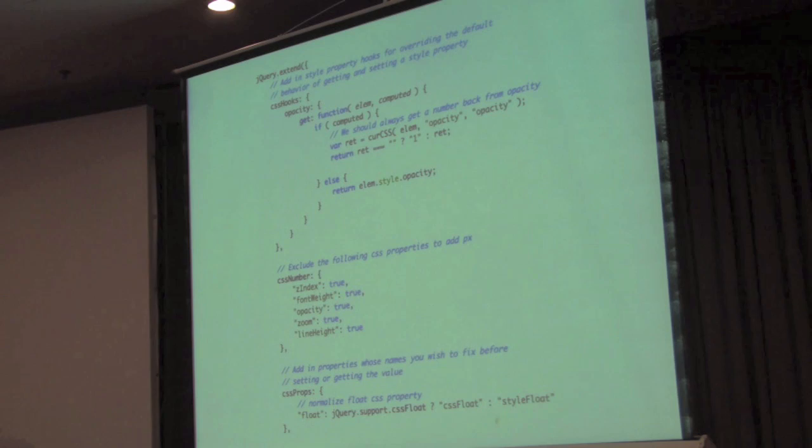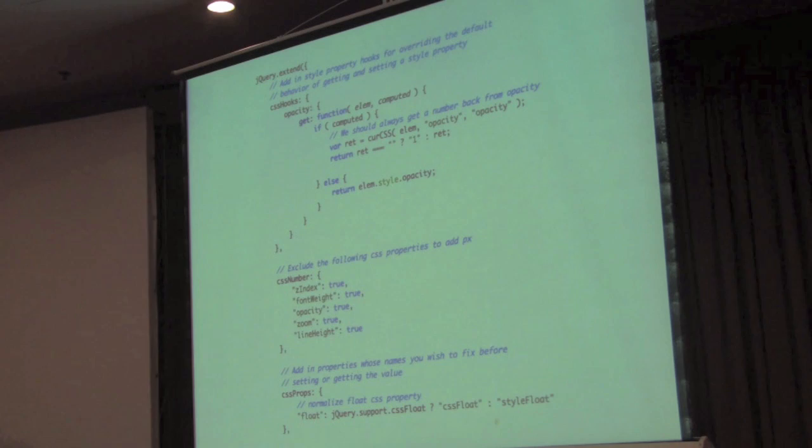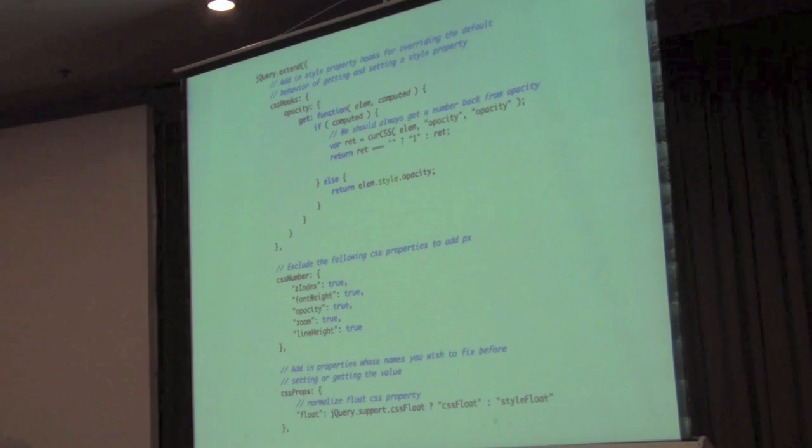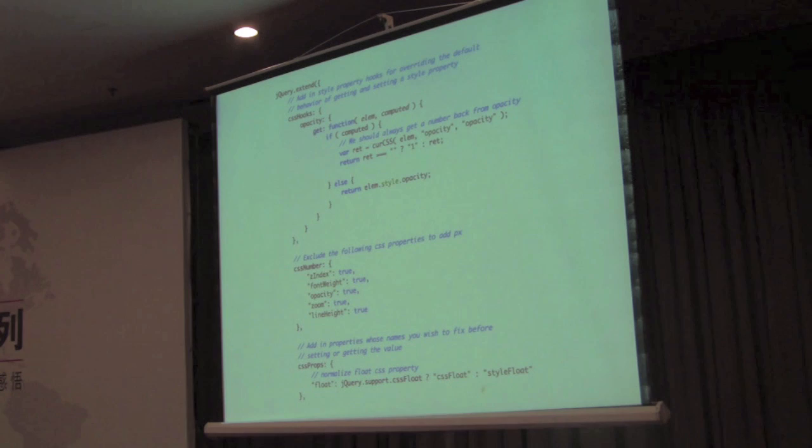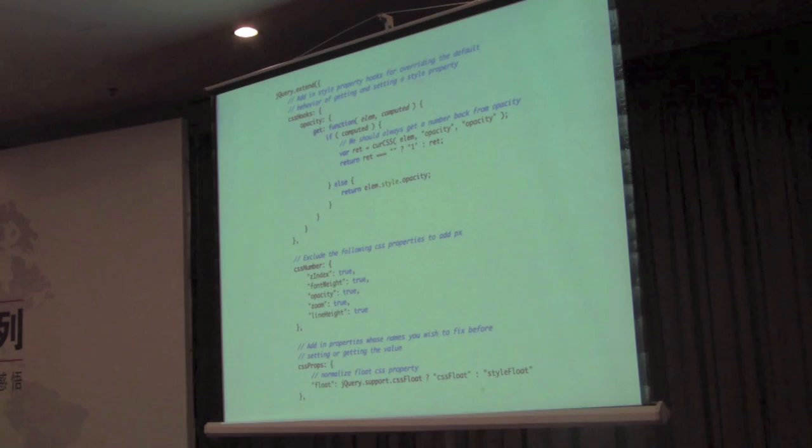Just to show you, this is some of the code that's in jQuery now. It might be kind of hard to read, but the important part is that there's now this thing called CSS hooks, where you can snap in new pieces of functionality that take care of specific CSS properties. That way, you can implement features that will make different CSS3 properties work across all browsers.